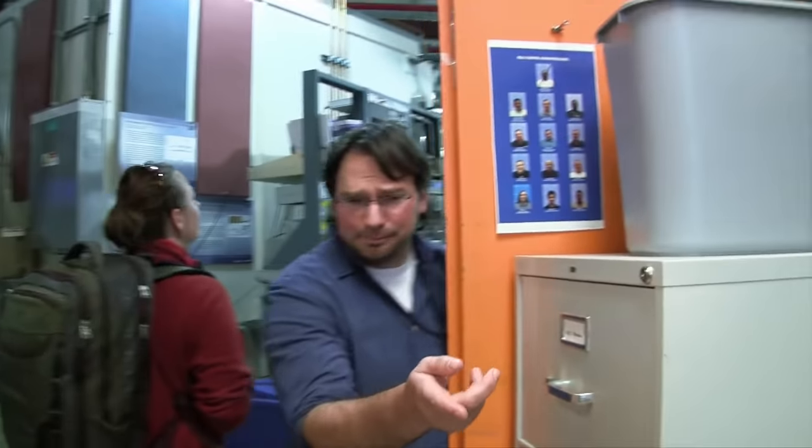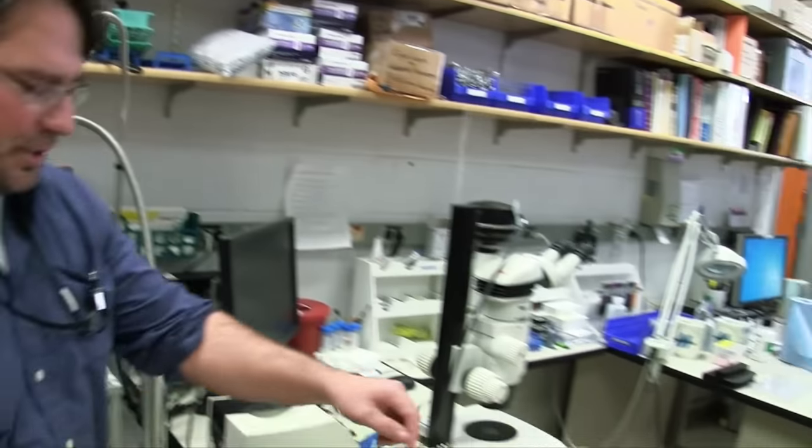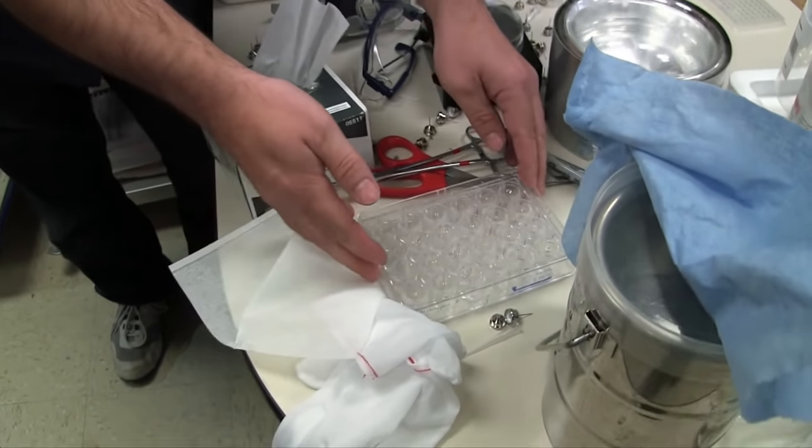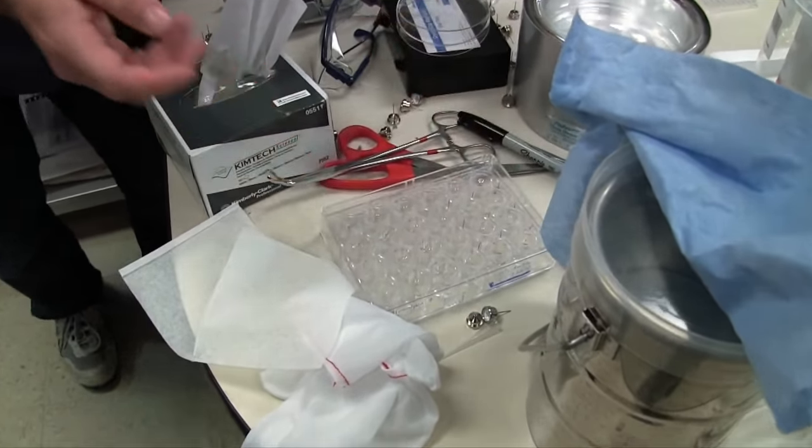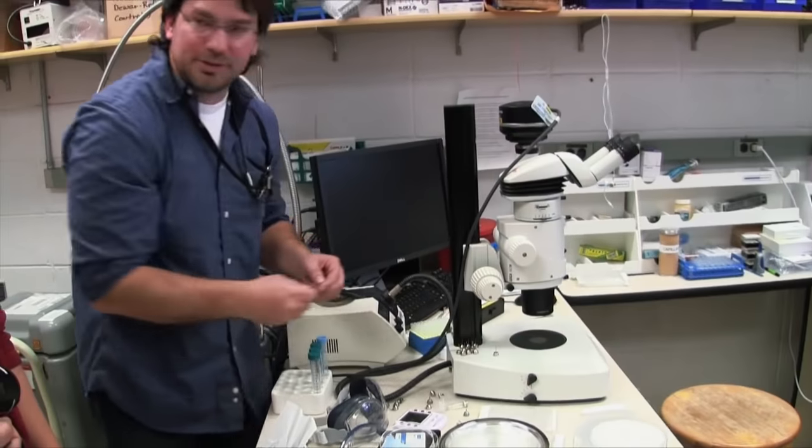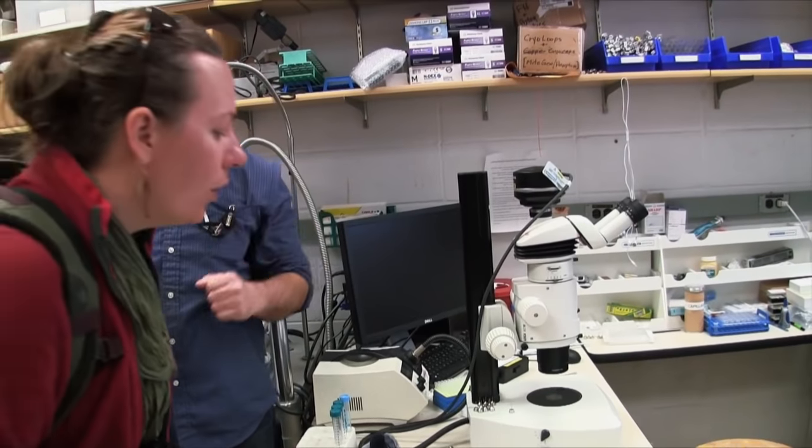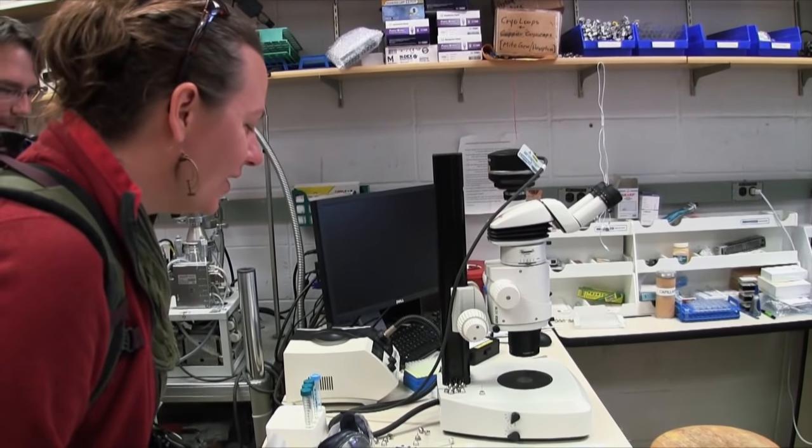So this is where scientists will, the crystals are grown on trays like this. And then the individual crystals are fished out, usually by hand, under a microscope. And then they're brought over, frozen, and then shot with x-rays. And then we see what's in there.